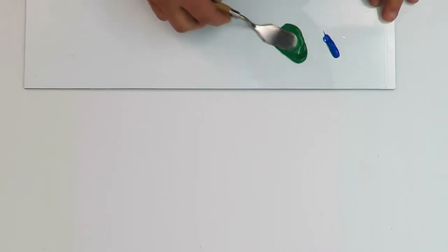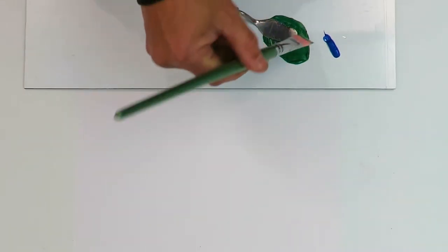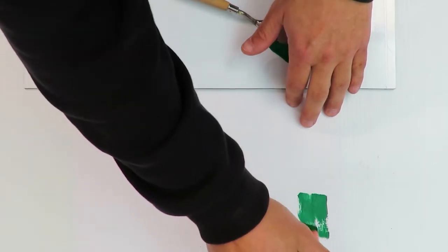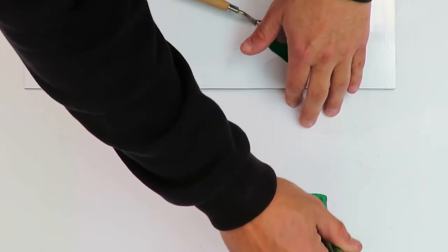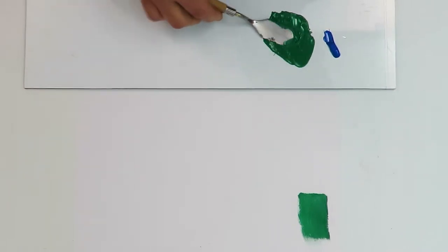Okay. So let's just get a small amount of blue and we'll mix it in the green. Add this to the paper. Add more blue. We'll get a bit darker.